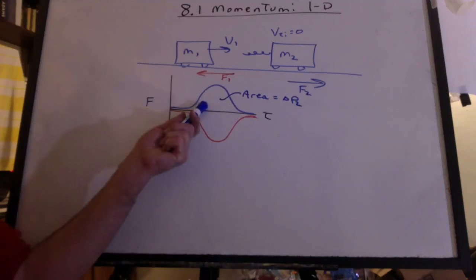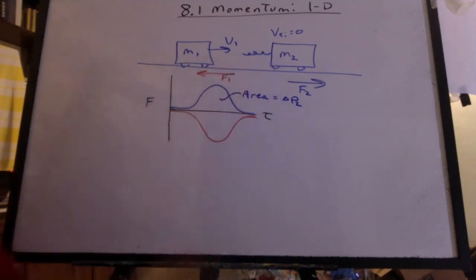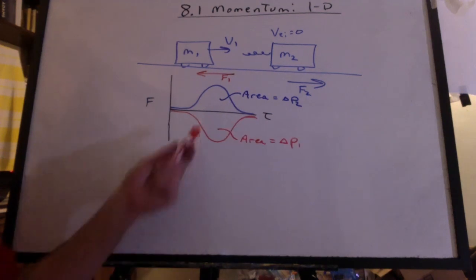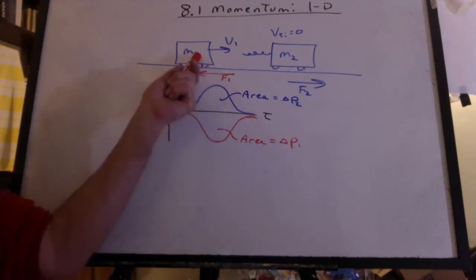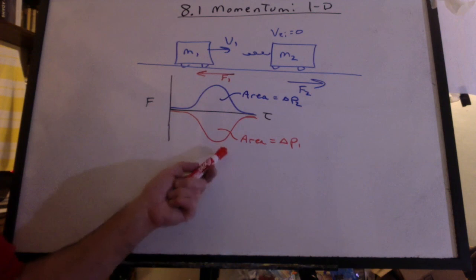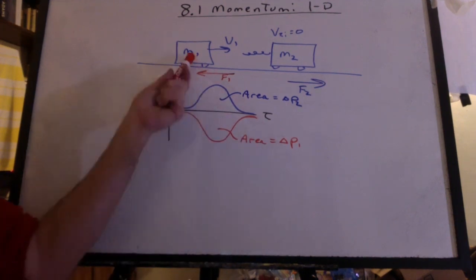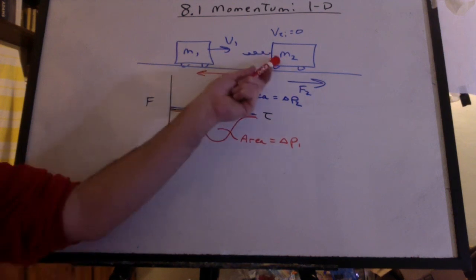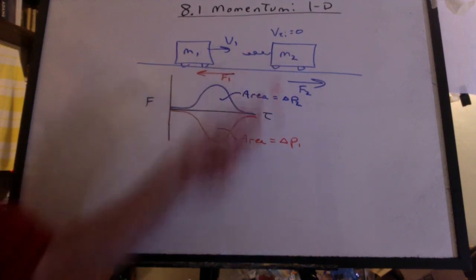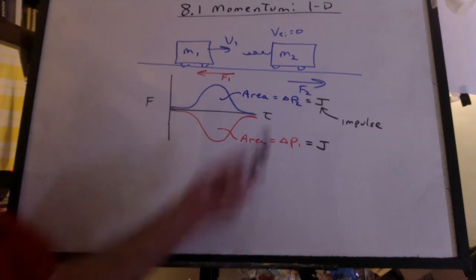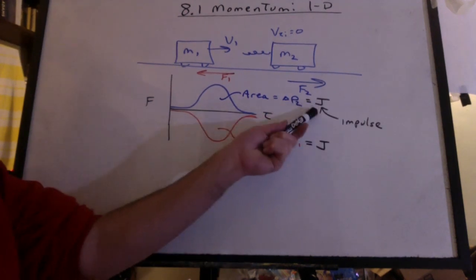So this area must be the change in momentum for this cart. And this area must be the change in momentum for that cart. I think it makes sense. A negative area gives me a negative change in momentum. This cart slowed down. That positive area giving me a positive change in momentum. That cart sped up.